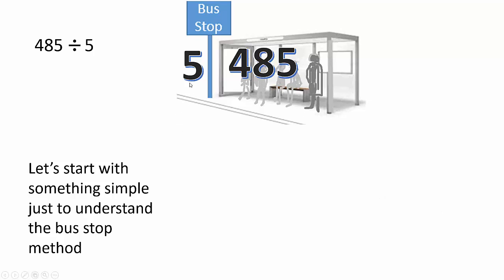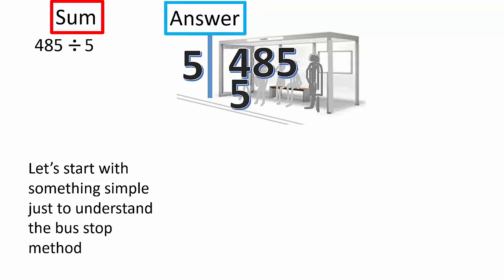Right, we're going to say 5 into 4. 5 into 4, well it doesn't go does it? So, let's bring down the 4, bring down the 8. Now, 5 into 48. 5 times table is very straightforward isn't it? So, 5 into 48 goes 9. 9 fives. 9 times 5 equals 45.